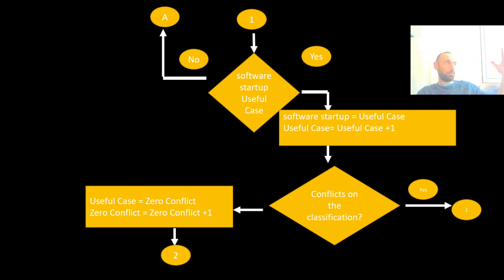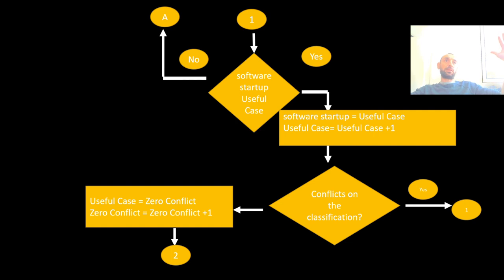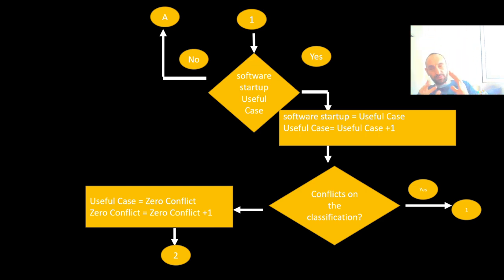From the package of useful cases, we check whether there is any conflict. If there is a conflict, we go back to iteration one. If there is no conflict, the useful case has zero conflicts and we increment a zero-conflict counter. So in summary: from a qualitative set of companies, we filter to software startups, then to useful cases, then to useful cases with zero conflicts.